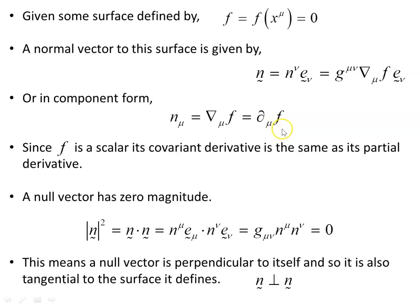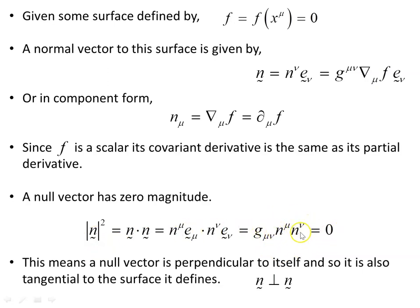A null vector has zero magnitude squared: n·n = g^{μν} n_μ n_ν = 0. This means a null vector is perpendicular to itself and therefore tangential to the surface. If the normal vector n has zero magnitude squared, then n_μ must be perpendicular to itself — so this vector is simultaneously tangential to the surface and normal to the surface, because of the condition that its magnitude squared is zero.